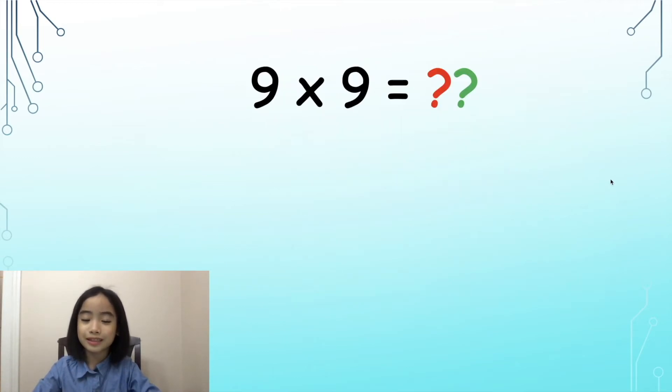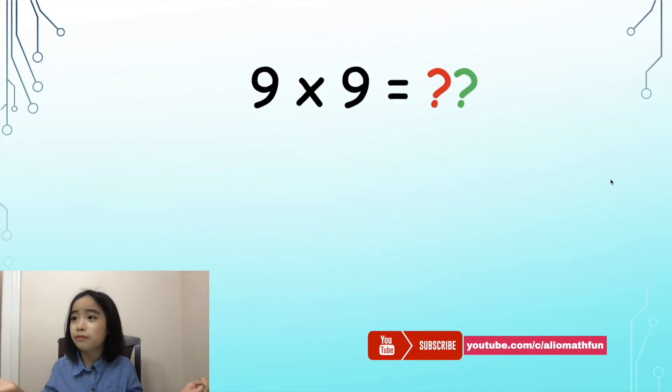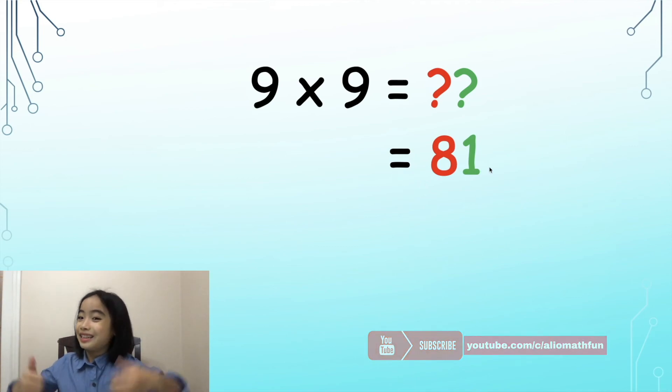Now, let's do another example. Let's use the same method. What is 9 times 9? Well, 9 minus 1 equals 8, so we put the 8 in the 10s position. 9 minus 8 equals 1, so we put the 1 in the 1s position. The answer is 81. This works!